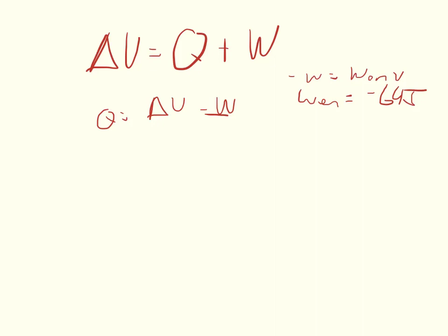We've already said that delta U, so delta U is equal to zero, so we say that Q is equal to zero minus work. And so since minus work is equal to negative 64, Q is equal to zero minus 64.